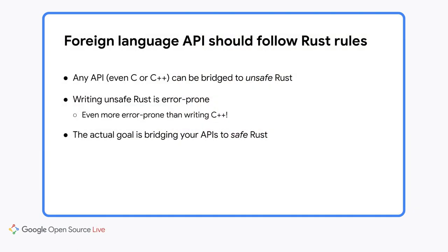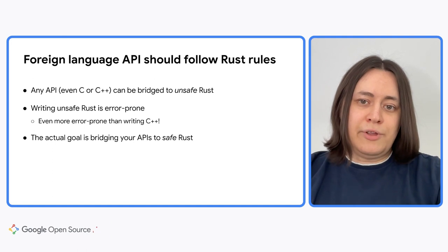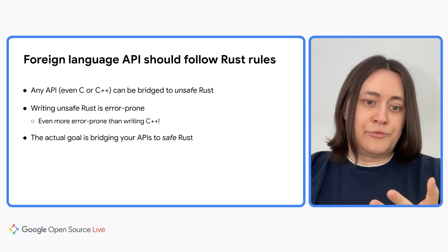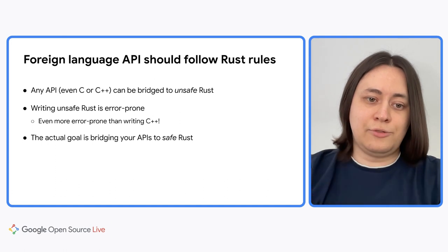So what does it mean for a foreign language API to follow Rust rules? It is possible to bridge any foreign language API to unsafe Rust. However, that forces your team to sprinkle snippets of unsafe Rust throughout the codebase, which is extremely not desirable. Unsafe Rust can be even more tricky to write than C++ because it has new kinds of undefined behavior compared to C++ — for example, stacked borrows violations. Your actual goal should be bringing your foreign language API to safe Rust, and that requires your existing code — for example, your C++ code — to follow Rust safety rules, at least on the API boundary.